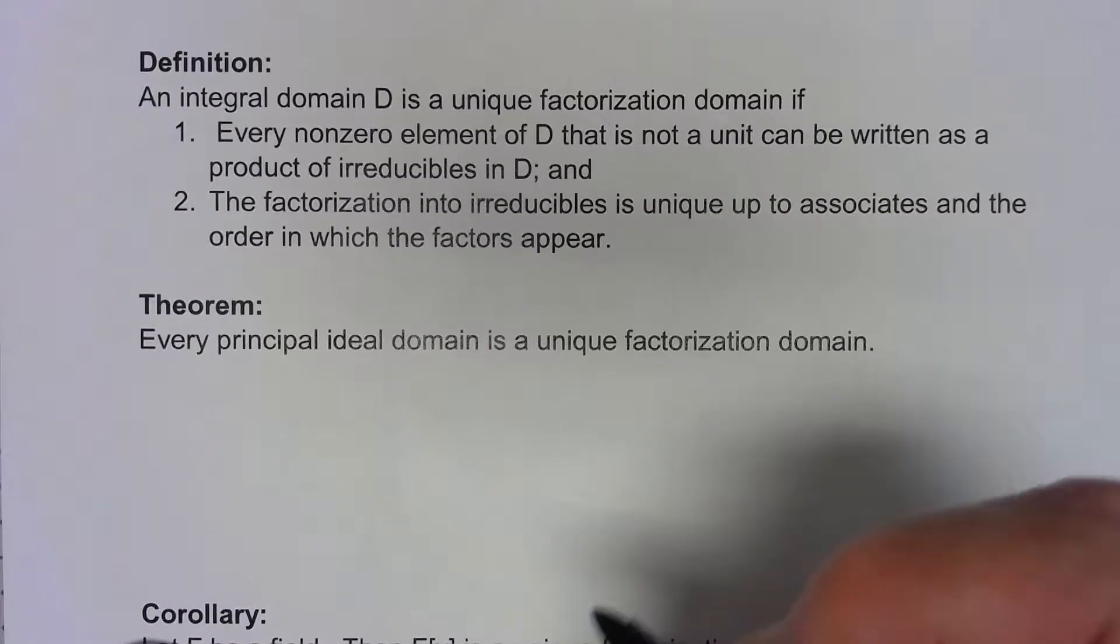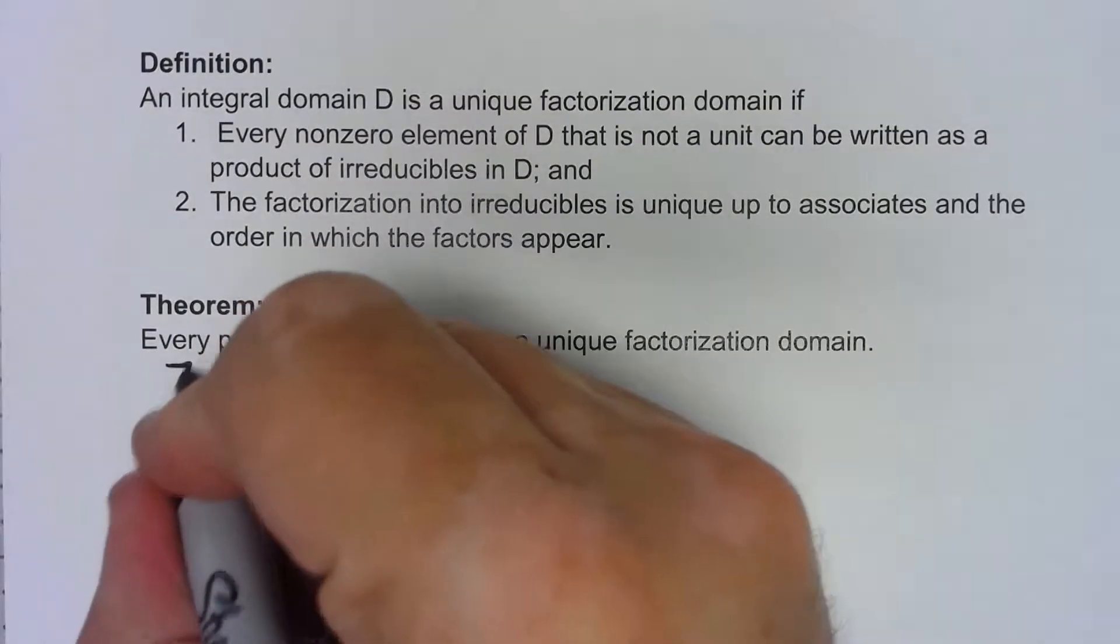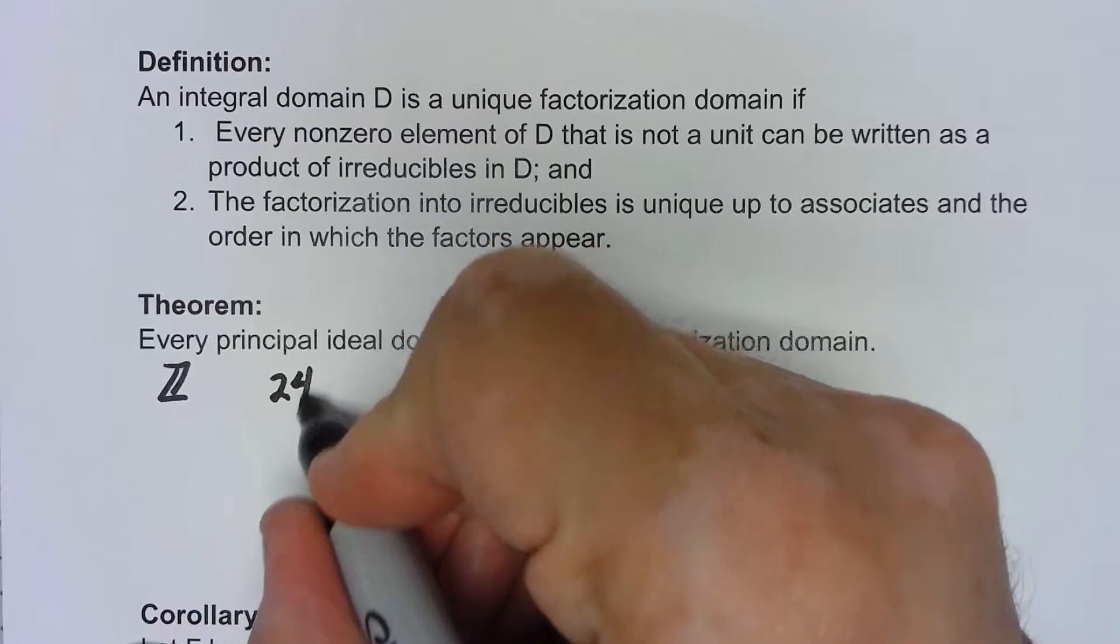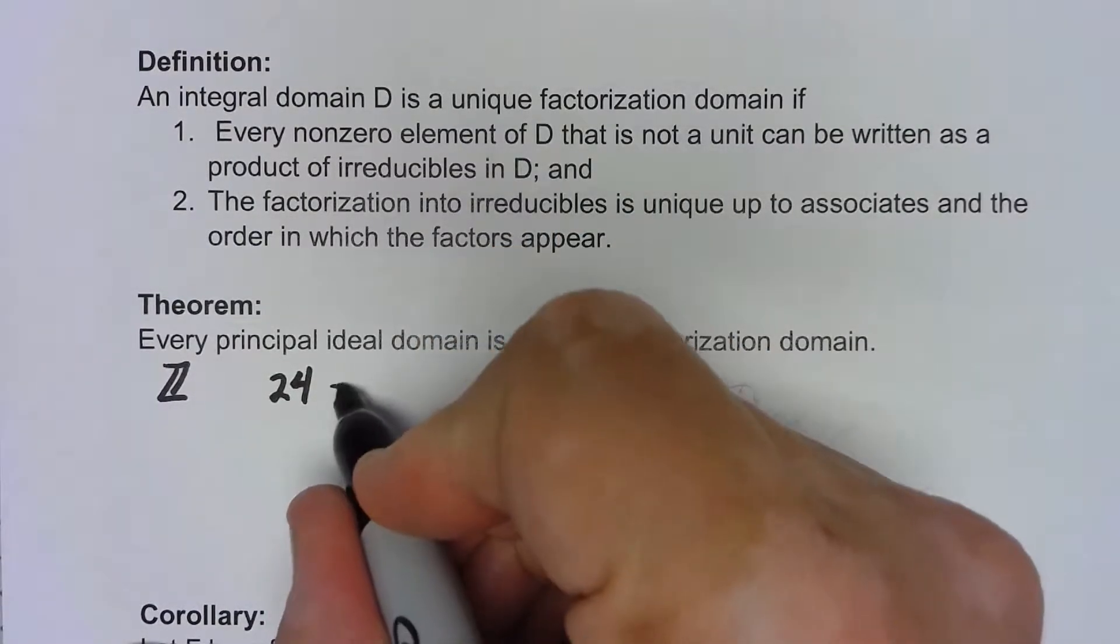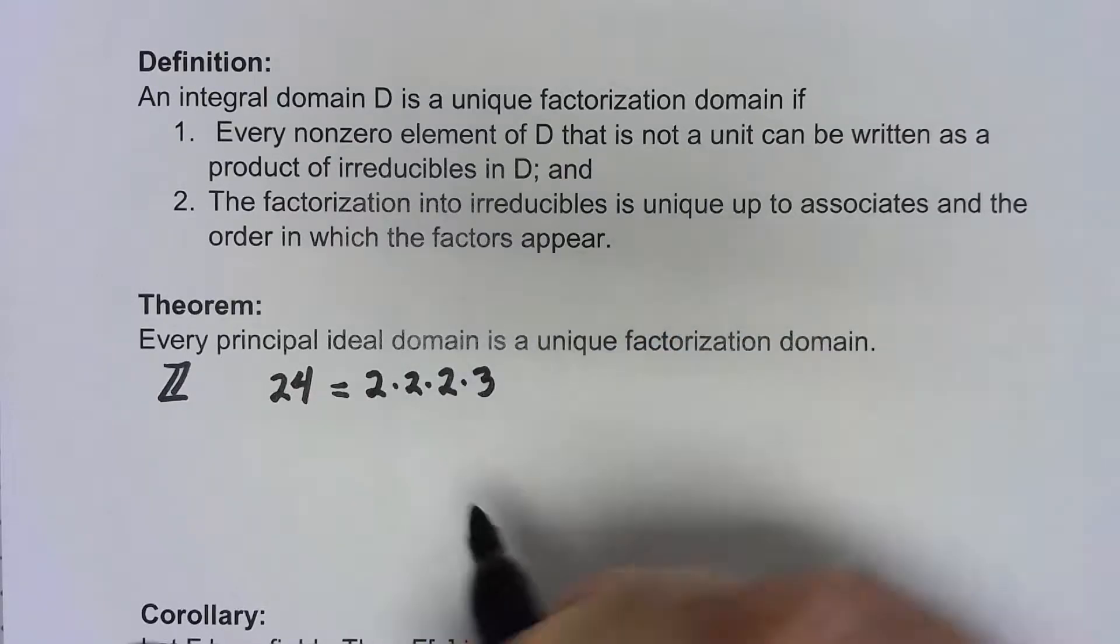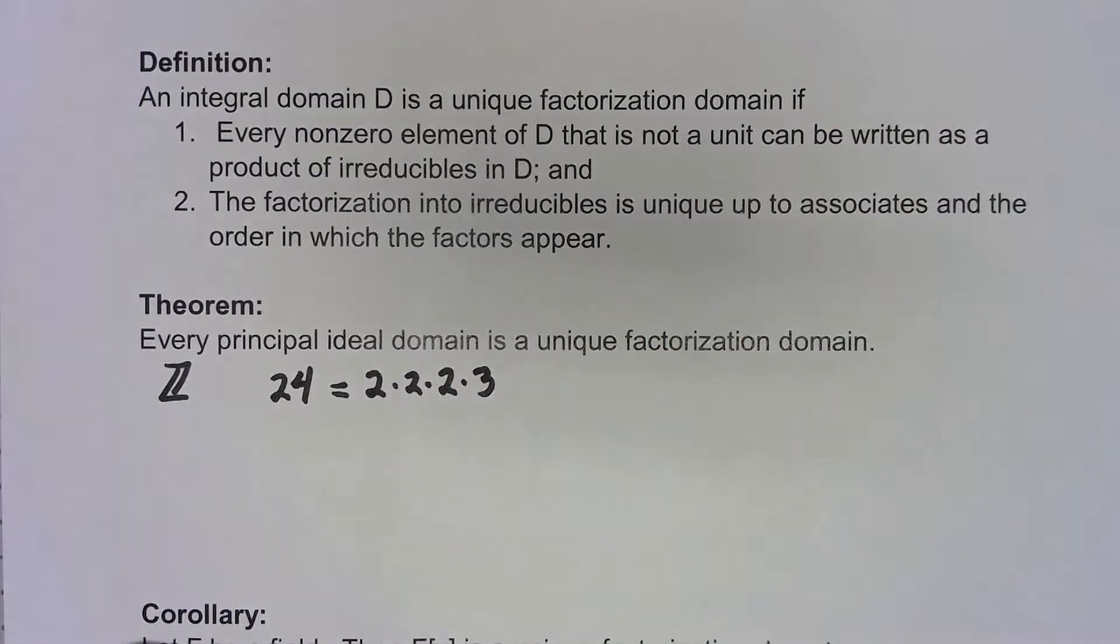Obviously the inspiration for this is Z, because if you take a number, say 24, we can break that thing down as 2 times 2 times 2 times 3 where those are all irreducibles.